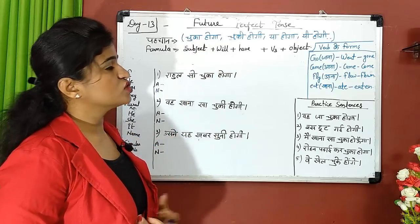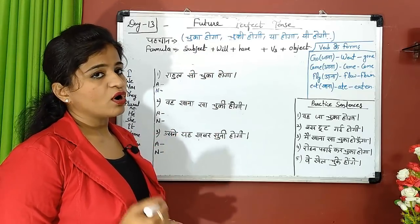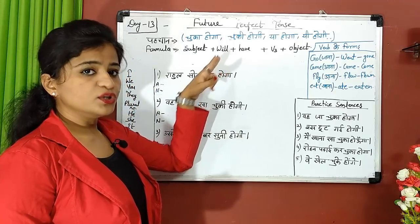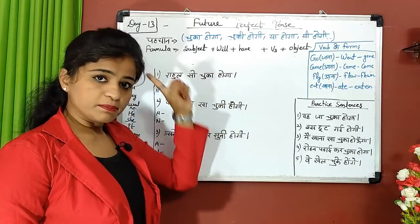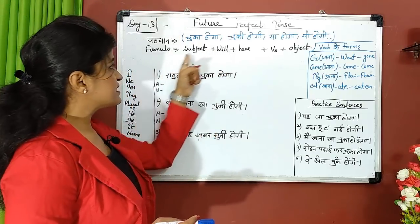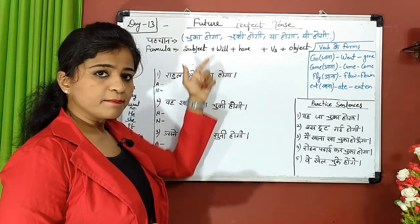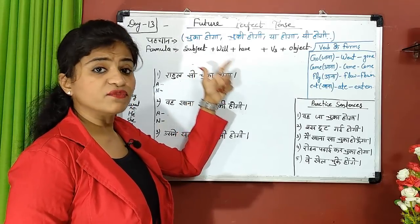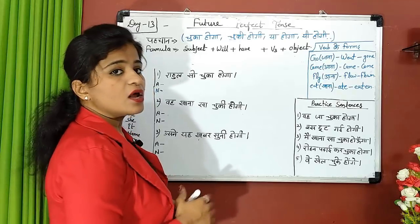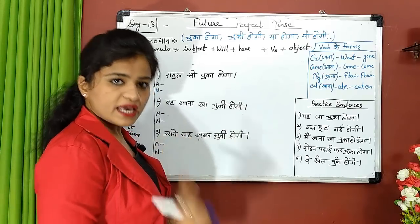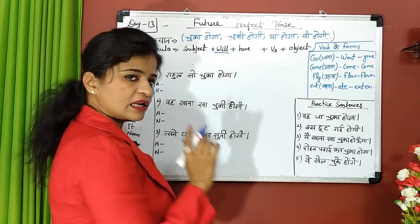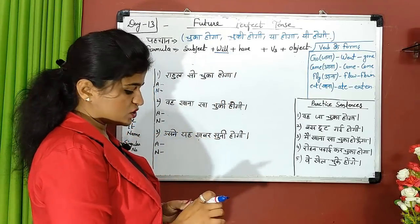In the last two videos on future indefinite and continuous tense, I told you that 'shall' was used in old English with 'I' and 'we.' But in modern English, 'shall' is obsolete — it is not used. So just remember the formula: 'will' will come. I don't need to write 'shall' here.